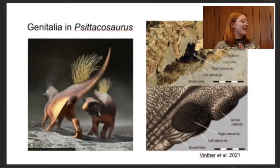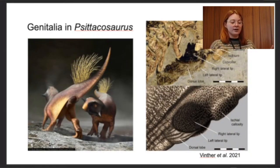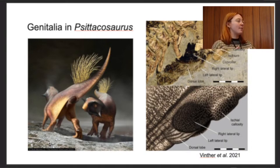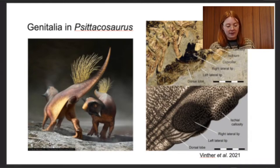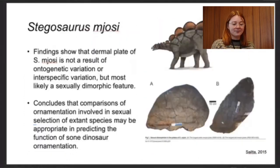The long and short of it is that genitalia can tell us whether they're male or female — we just need to better understand the differentiation between the two, probably through studying modern archosaur cloacas in birds and crocodilians and transferring those findings over. That's probably the way we'll have to go.